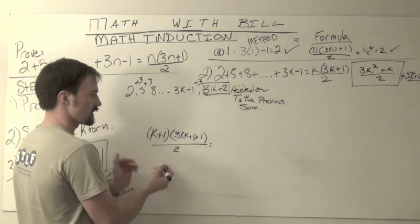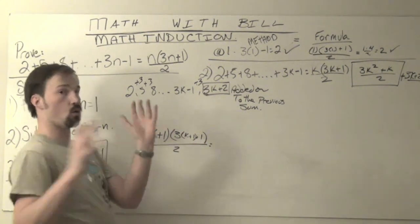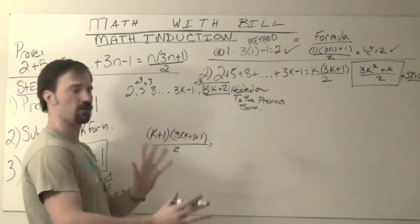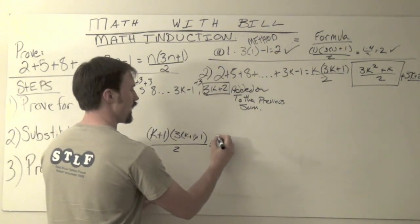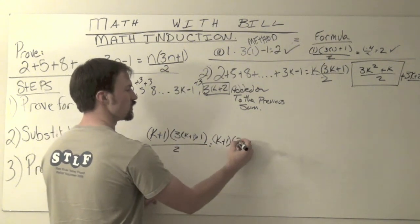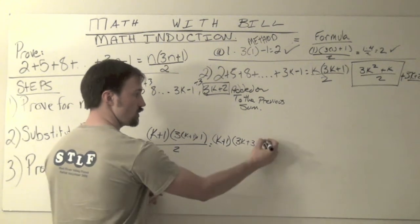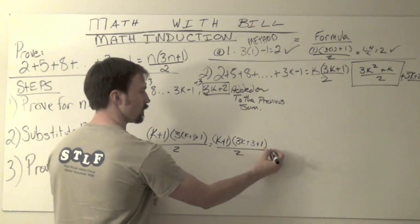So we've got k plus 1, that's fine. 3 times quantity k plus 1 plus 1 more—whoa! Let's figure that out. So what I have here is k plus 1. And then 3 times the k plus 1 is actually 3k plus 3 plus 1 more. All divided by 2.